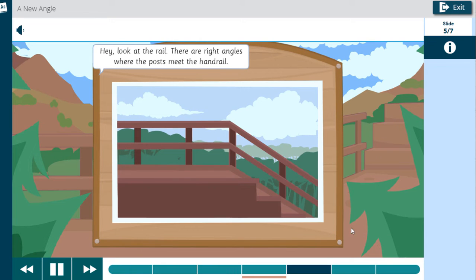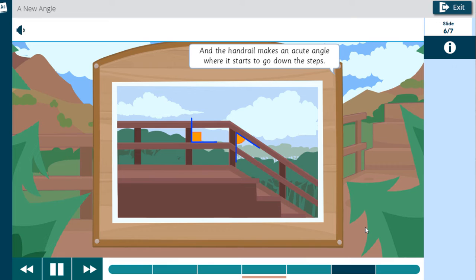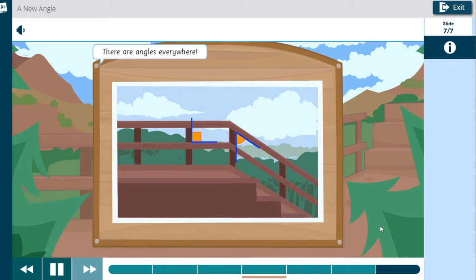Hey, look at the rail. There are right angles where the posts meet the handrail. And the handrail makes an acute angle where it starts to go down the steps. There are angles everywhere. Let's go look for some more.